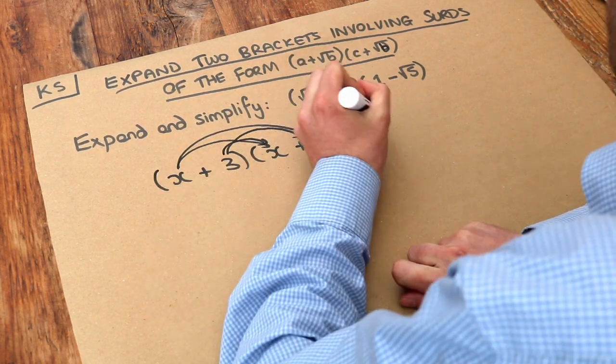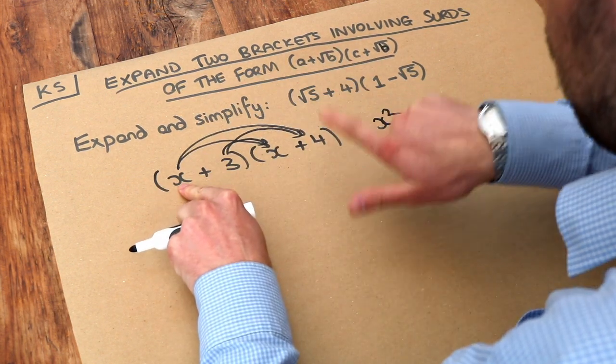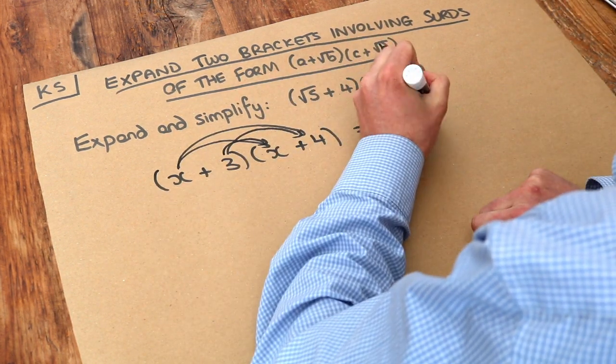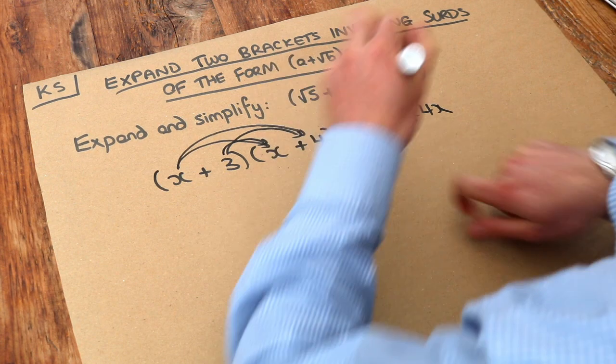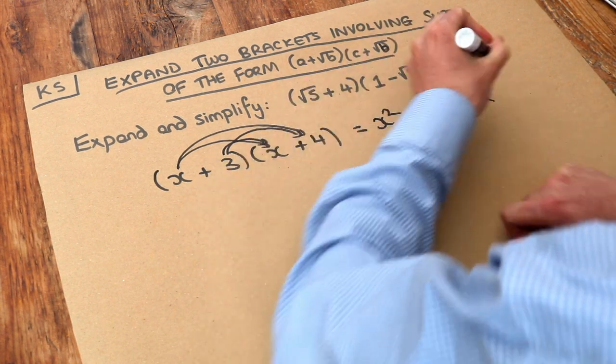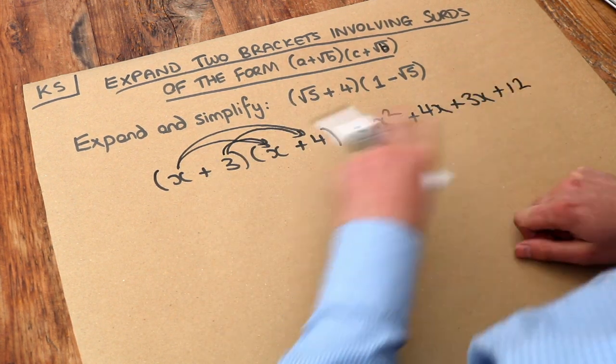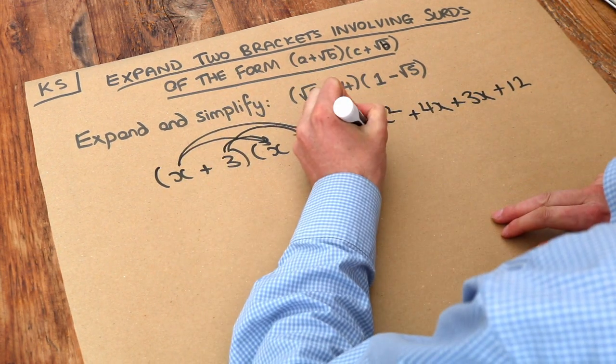So we do the x times the x, we get x squared. If we do the x times the 4, we get 4x. If we do the 3 times the x, we get 3x. And if we do the 3 times the 4, we get 12. So we get all the possible combinations of one thing from here, one thing from here.